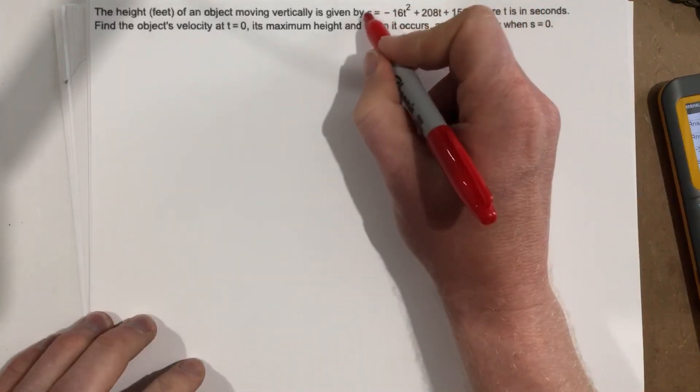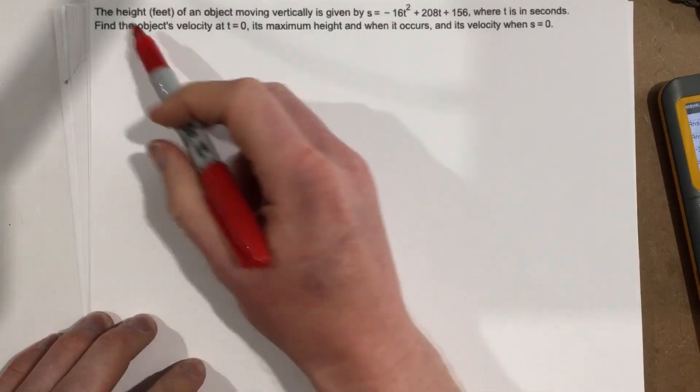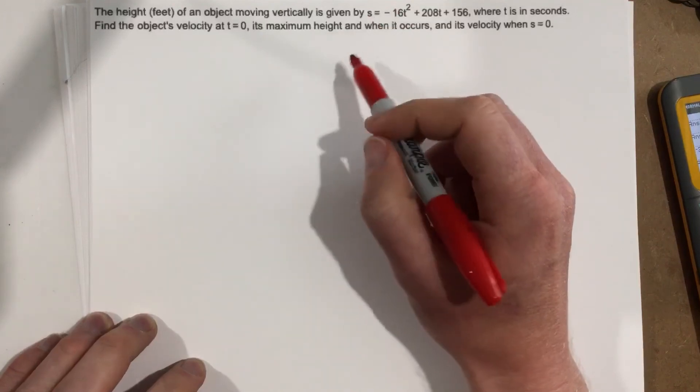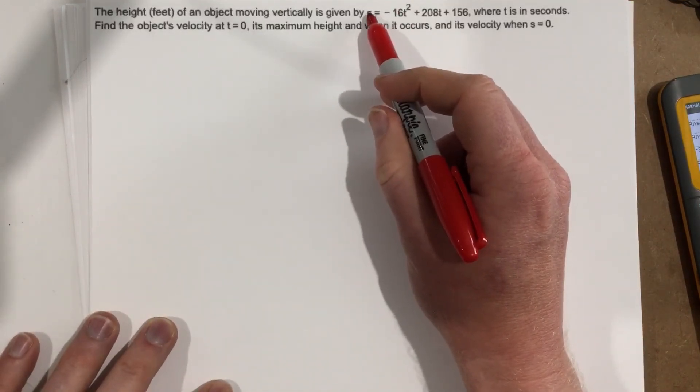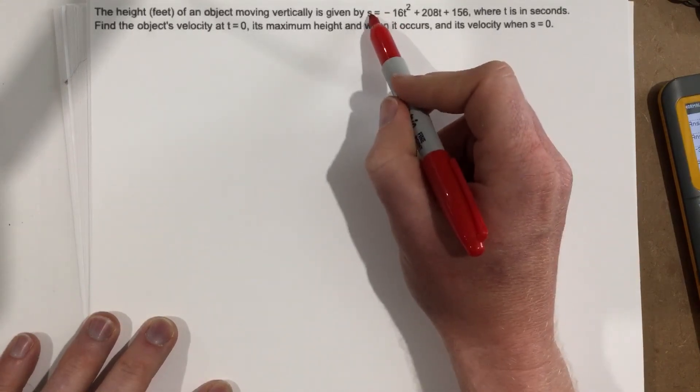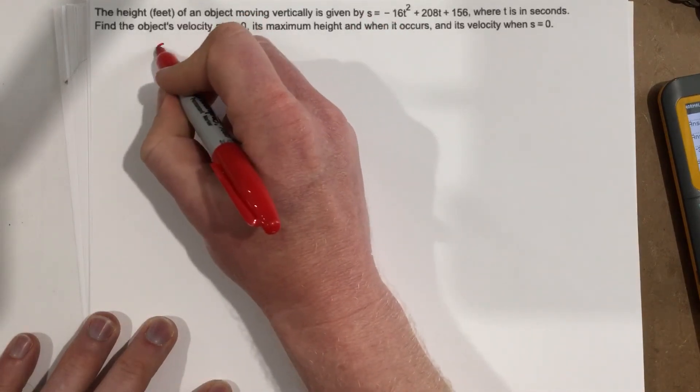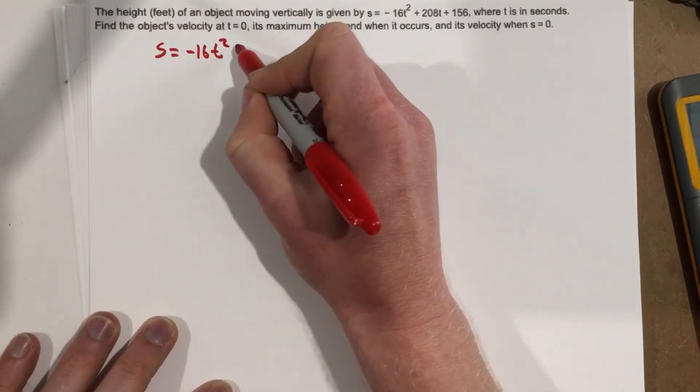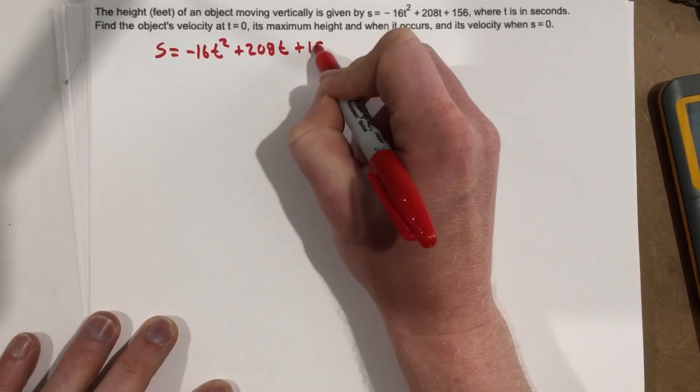First of all, we need to know that s stands for our displacement, right? That stands for our height, and that's what they're telling us right here. It stands for how high this object's flying. Now, if we take the derivative of height, we get velocity. So when we take the derivative of the height, we're going to get a velocity. So let's go ahead and write this out here. We have s equals negative 16t squared plus 208t plus 156.